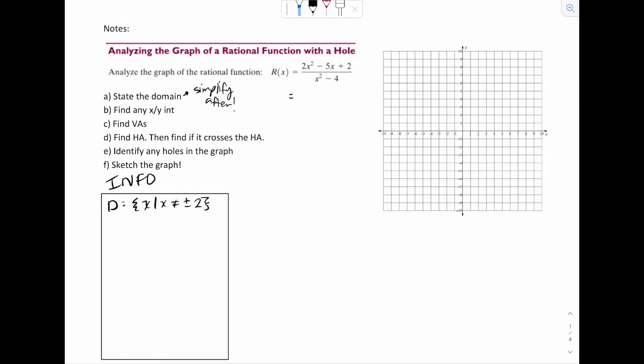So if I look at this function, I can see the top is factorable. That's 2x minus 1 times x minus 2. And the bottom is definitely factorable. That's going to be x plus 2, x minus 2. Notice how the x minus 2s cancel. And now we have a simpler function, 2x minus 1 over x plus 2.